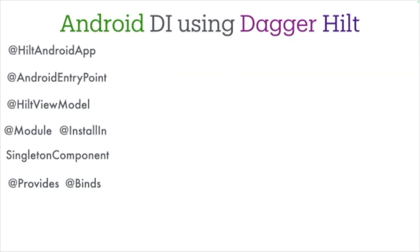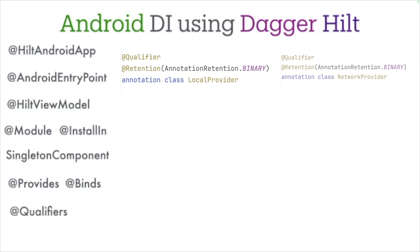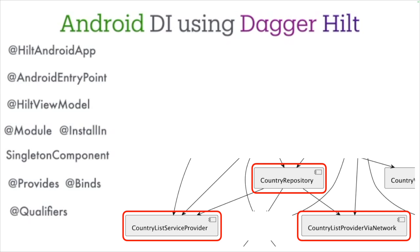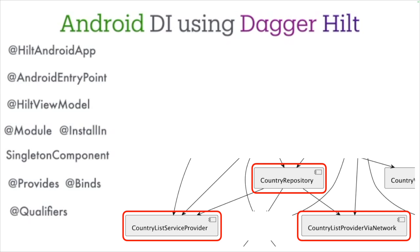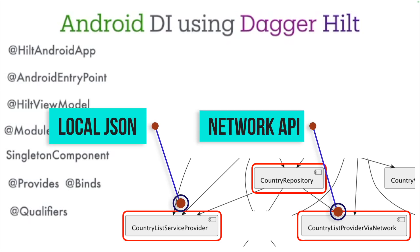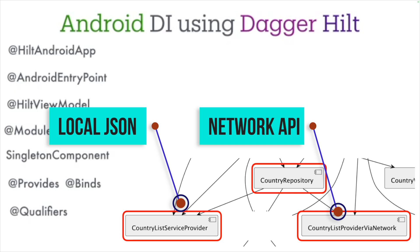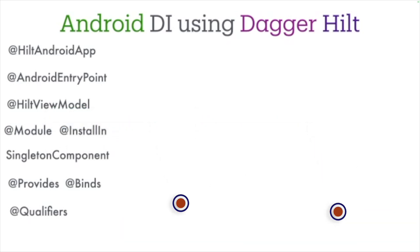We then went through another important concept: qualifiers. We introduced two types of qualifiers — NetworkProvider and LocalProvider — to differentiate between multiple implementations of the same interface, like when we had both a local JSON provider and a network-based provider. We also used @Inject to actually perform the injection of dependencies across our application.